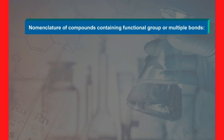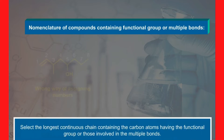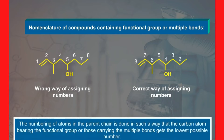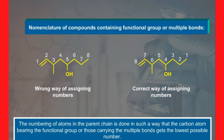Now let us discuss the set of rules followed in the nomenclature of compounds containing functional groups or multiple bonds. Select the longest continuous chain containing the carbon atoms having the functional group or those involved in the multiple bonds. The numbering of atoms in the parent chain is done such that the carbon atom bearing the functional group or those carrying the multiple bonds gets the lowest possible number.